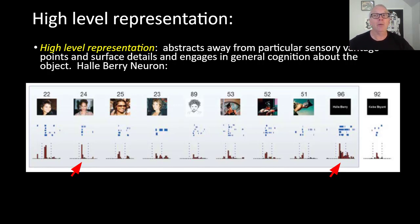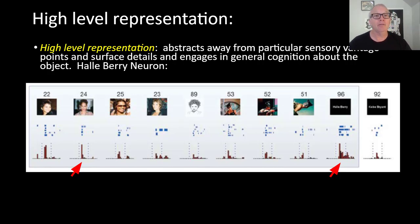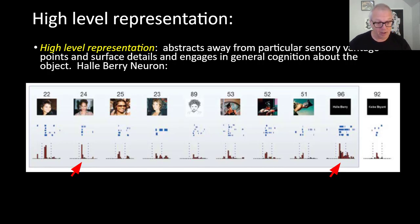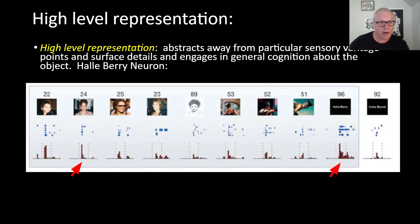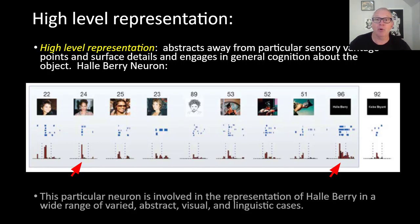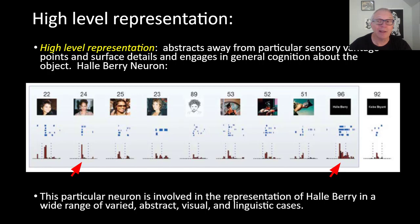So there's some pretty high-level, advanced representation going on for this neuron. There were some low-level edge detector neurons engaged in this activity too, but that's not the activity they were monitoring — they discovered this neuron operating at a very abstract level. From Prinz's perspective, this is going to be a very high-level representation, whereas what we're after is intermediate-level representation. This particular neuron is involved in representing Halle Berry in a wide range of varied abstract visual and linguistic cases.